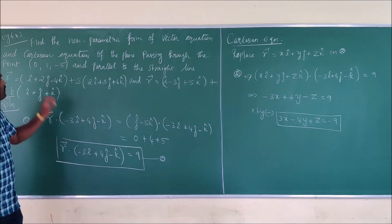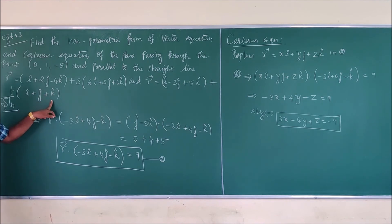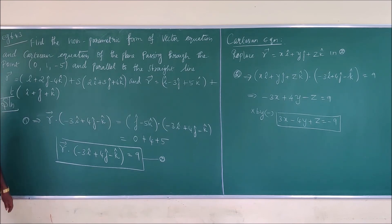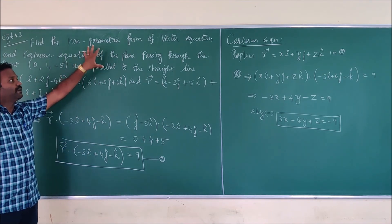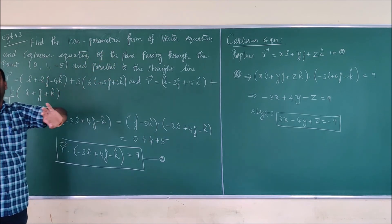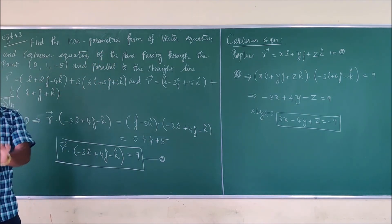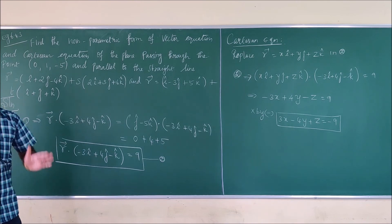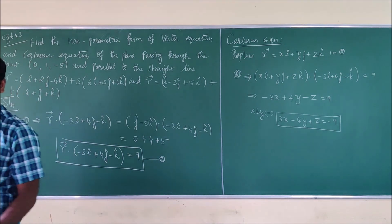One more thing — I have written the problem with a small typo. In the book it is -k, but I wrote +k. No problem; you can treat it as a practice variation. The concept is the same. Whenever a question is given, you have to identify the number of points and the number of parallel vectors, and accordingly write the correct formula.